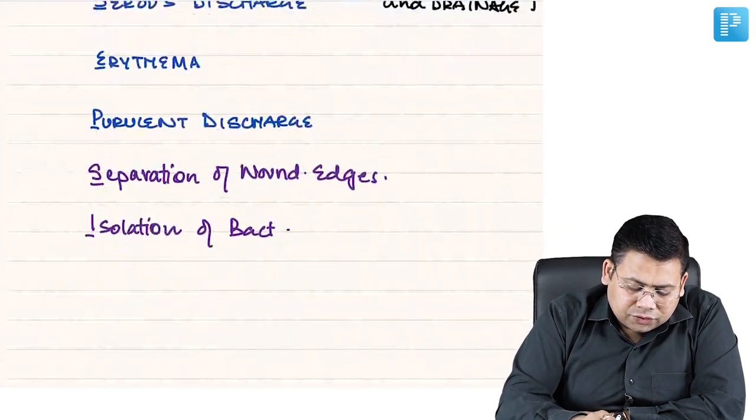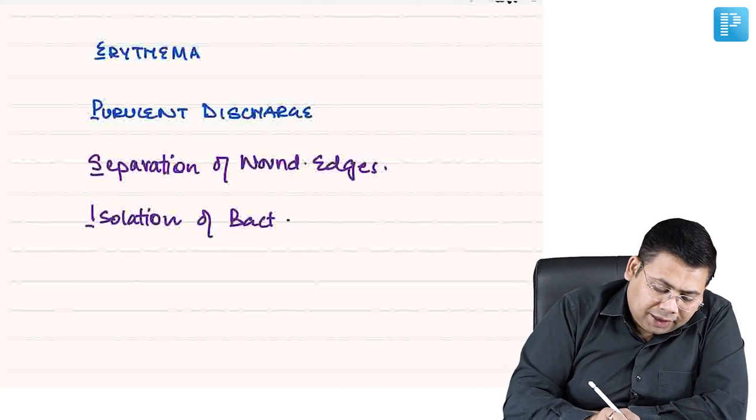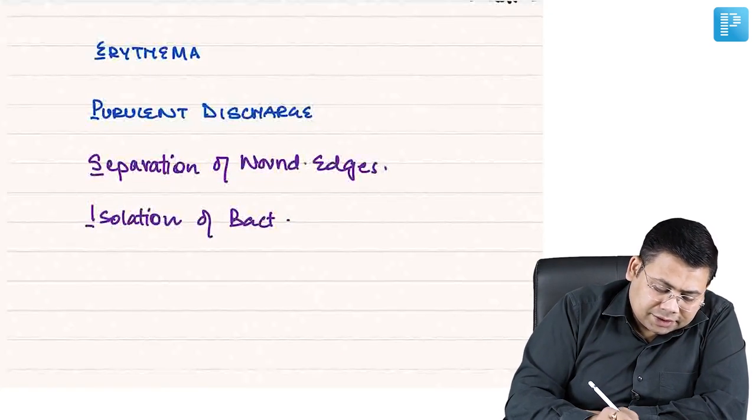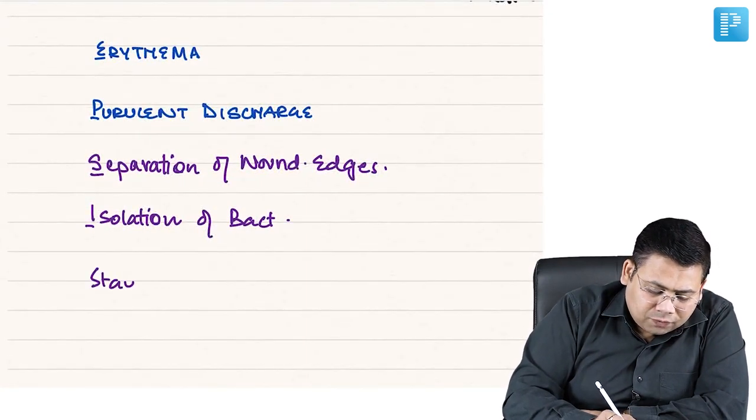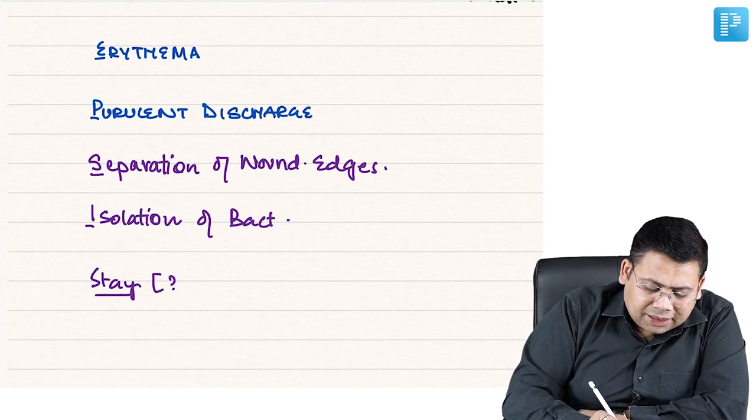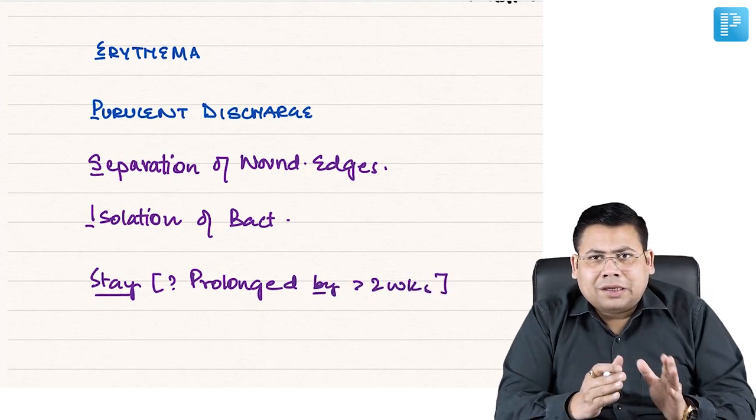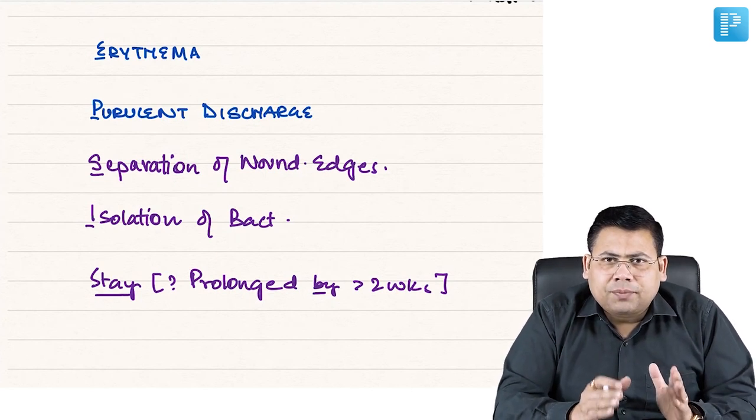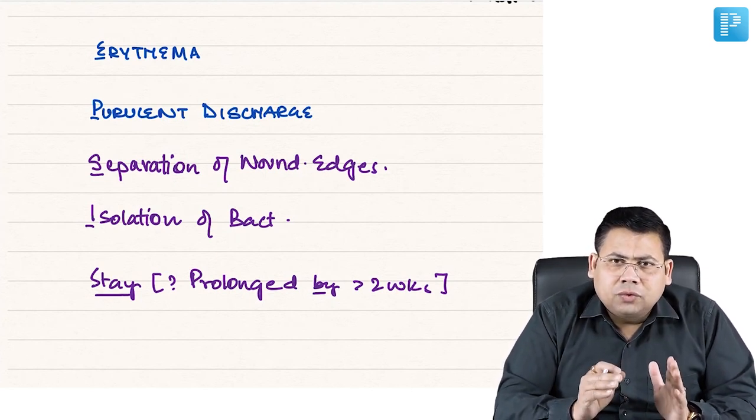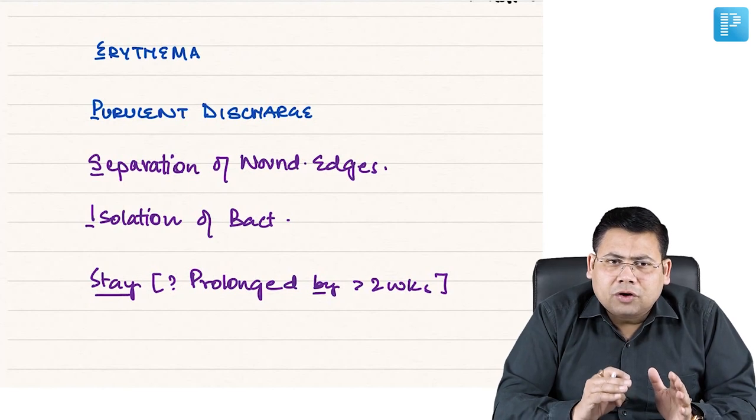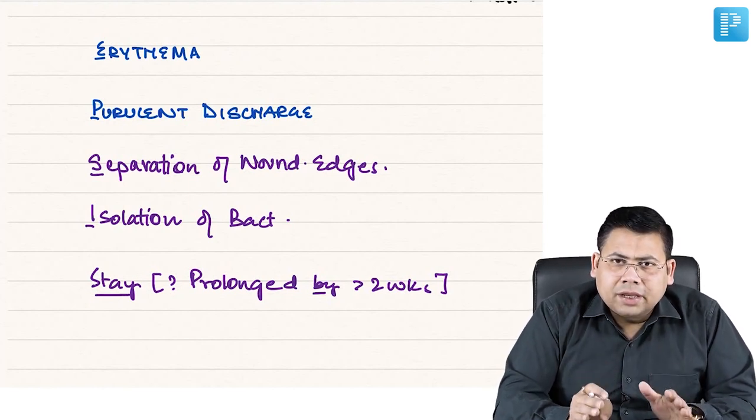Then last S is stay. What do you mean by stay? The stay is prolonged - the stay is prolonged by more than two weeks. So if for the conventional management of the patient you had to keep the patient in the hospital for a longer time, this is what is considered as prolonged hospital stay.